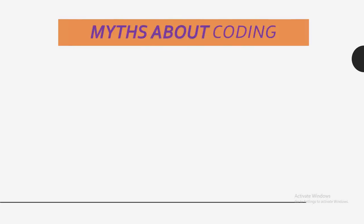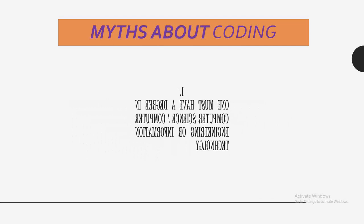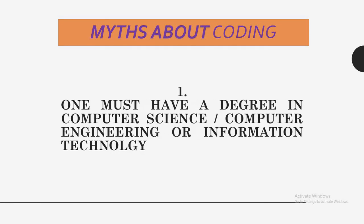Now we are going to talk about myths about coding. The first myth is that one must have a degree in computer science, engineering, or IT to be able to become a successful coder. This is not true. Everyone can code — at all levels of education, from primary to JHS, SHS, university. Everyone has the potential to be able to code.